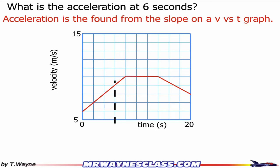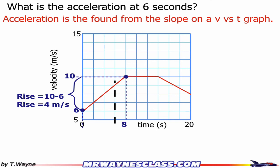So I've got to find the slope of this line. I'll pick two points going through corners of the squares — in this case, the endpoints of the line, since they're conveniently located at the corners of the squares. The rise will go from 6 all the way up to 10, and the run will go from 0 to 8. So the rise is 10 minus 6, which is 4 meters per second, and the run is 8 minus 0, which is 8 seconds.